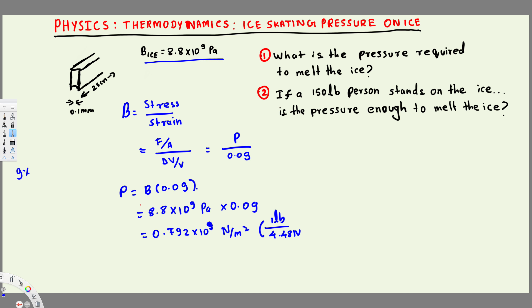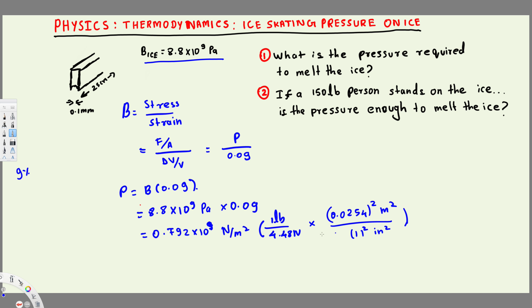We also need to convert meters into inches. We know that one inch equals 2.54 centimeters, which means one inch equals 0.0254 meters. We write (0.0254 meters)² over 1 inch² so that the meter squared cancels. Calculating this gives us 114,000 pounds per inch squared.